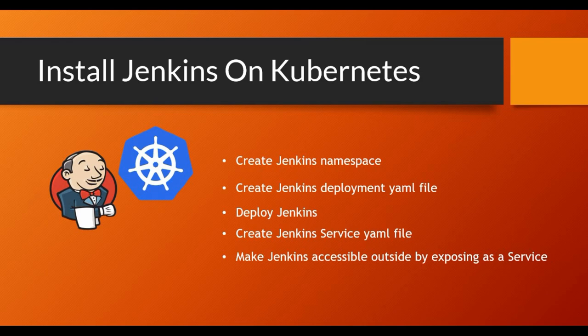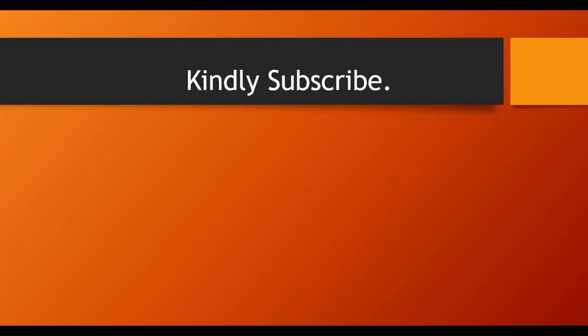We need to expose the deployment so we can access it from outside, and we need a service for that. Once we use the service YAML file, Jenkins will be accessible from outside. We'll then access the Jenkins dashboard, enter the initial setup password from the Kubernetes logs, and set up the admin account.